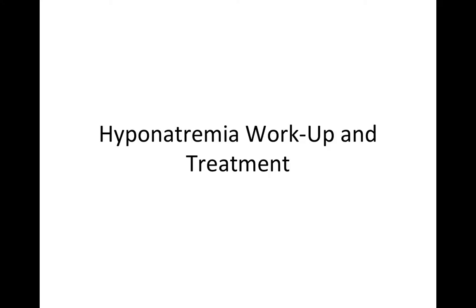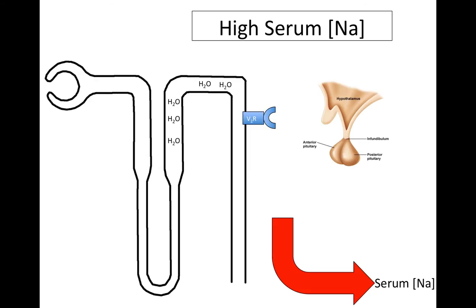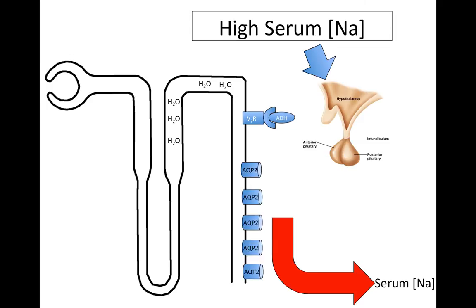I'm going to be talking about hyponatremia and how to work it up and treat it. Hyponatremia is defined as a sodium concentration under 136, and the important thing to remember about the physiology is that sodium concentration is controlled by free water homeostasis, not directly through sodium homeostasis. For example, very high serum sodium causes the posterior pituitary to release antidiuretic hormone, which binds to vasopressin-2 receptors in the kidney, causing insertion of aquaporin-2 channels that reabsorb water, thereby concentrating the urine and decreasing sodium concentration.